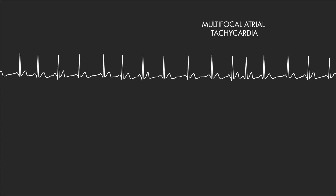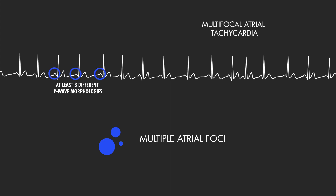This is in contrast to multifocal atrial tachycardias that originate from multiple atrial foci, as evident in the presence of P-waves with different morphologies. This can also be reflected in the ventricular rate as irregular R-to-R intervals and an irregular rhythm.